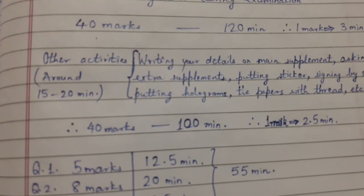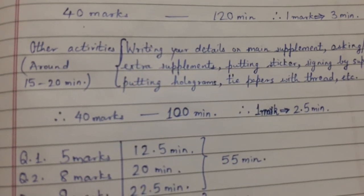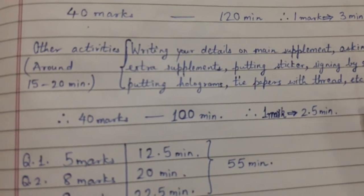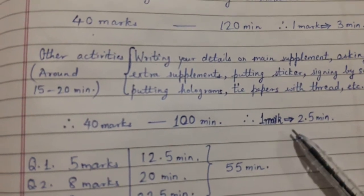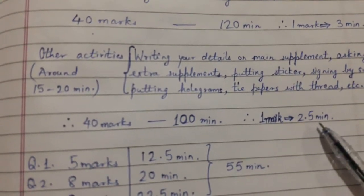So you are left with 40 marks and 100 minutes. That means one mark is equal to 2.5 minutes.